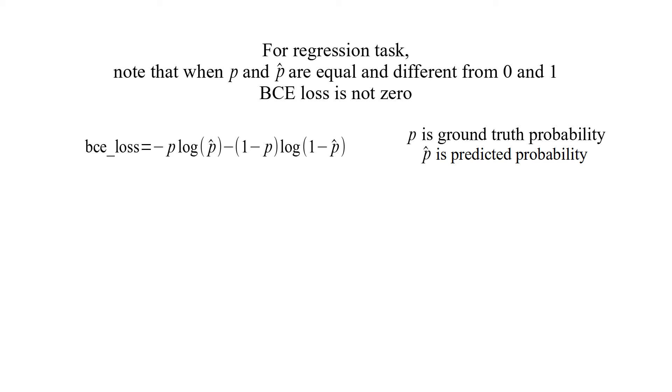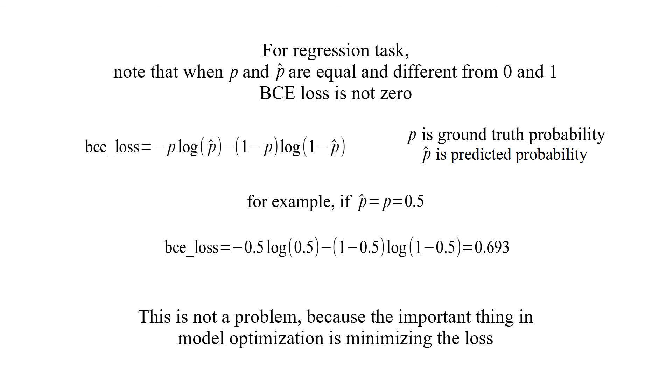For regression task, note that when P and P hat are equal and different from 0 and 1, binary cross entropy loss is not zero. For example, if P and P hat are both 0.5, this is the loss value. It is not a problem because the important thing in model optimization is minimizing the loss.